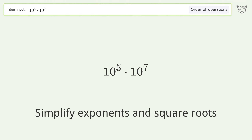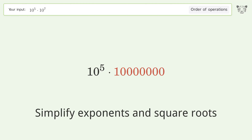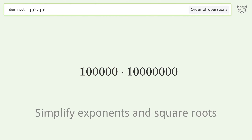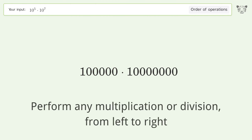Simplify exponents and square roots: 10 to the power of 7 equals 10,000,000 and 10 to the power of 5 equals 100,000. Then perform any multiplication or division from left to right.